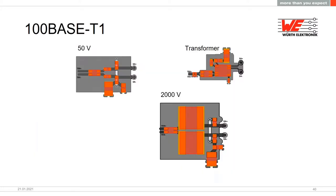Comparing PCB footprints for 100BASE-T1: the 50V capacitor solution is the smallest, particularly thanks to the small capacitors. The transformer solution is also quite compact. The 2 kV capacitor solution is the largest. The right choice depends on available space and application requirements.